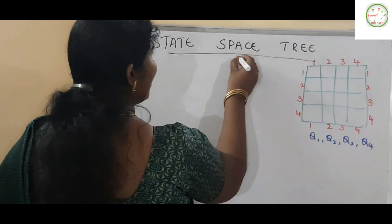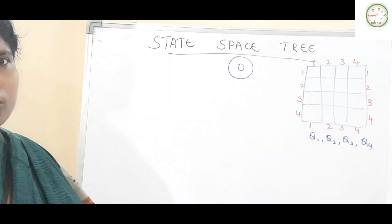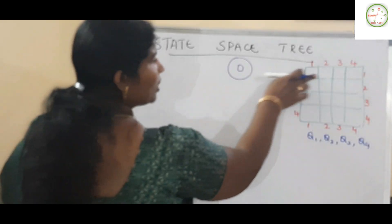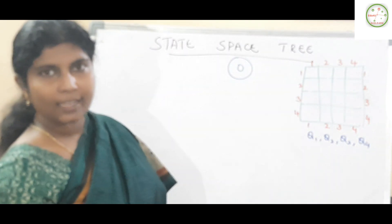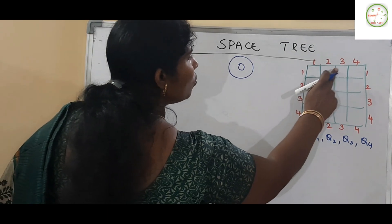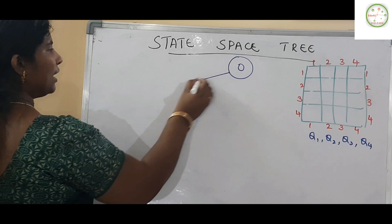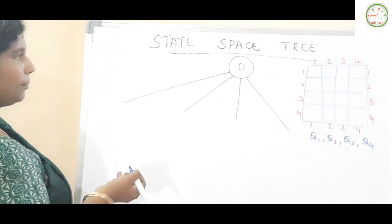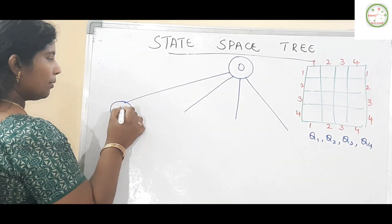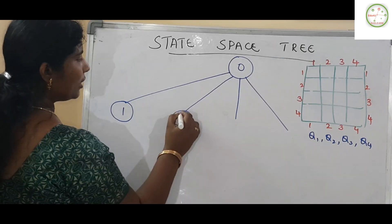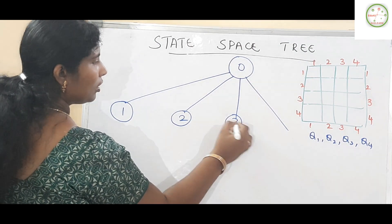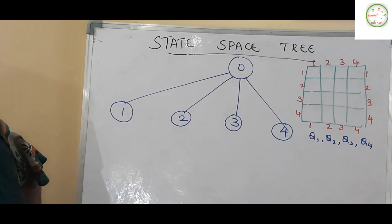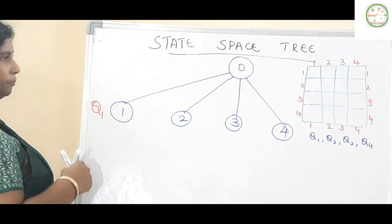Initially we have a root node which is 0 — that is, nothing has been placed yet. Placing queen Q1 on the first row, we are concerned with which position to place it. We have 4 options: position 1, 2, 3, or 4. So either I can place my queen in the first, second, third, or fourth location. This is with respect to placing Q1.